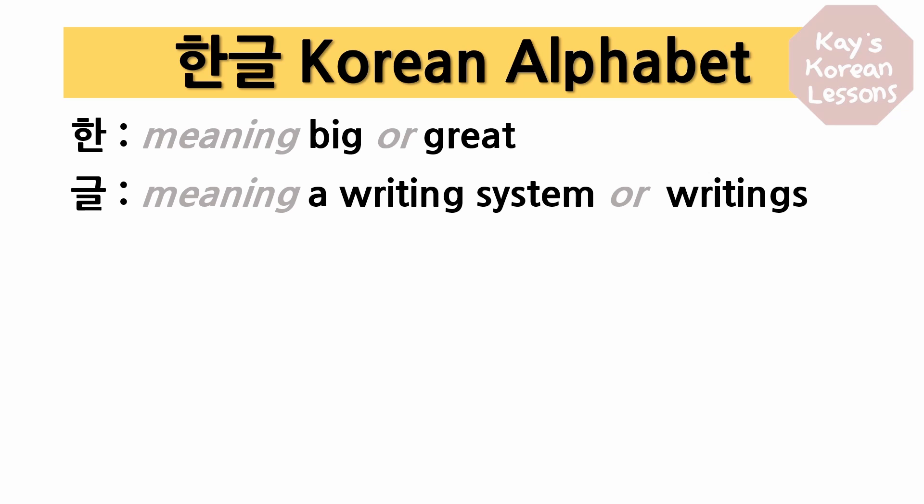The name of the Korean alphabet is 한글. 한 means big or great. When we say the name 한국 or 대한민국 for Korea, that 한 also means the same. 글 is a writing system, or writings.